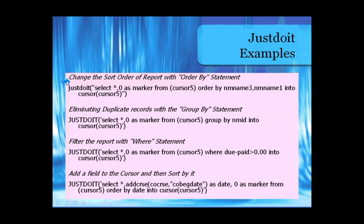Here are more examples. To change the sort order with an order-by statement: select star, zero is marker — making this the last just do-it to run — from cursor 5, change the order, then put it back into cursor 5. To eliminate duplicate records, if we only wanted one record per name and had the name ID as a unique identifier, we would do a group by NMID, giving us only one name per student.